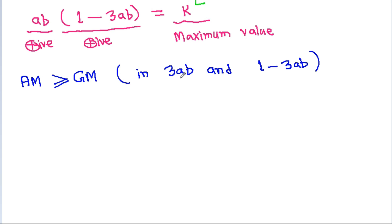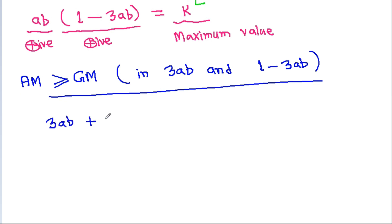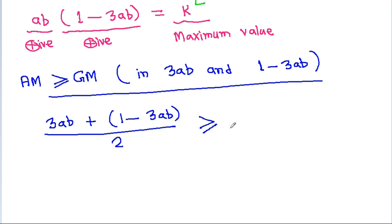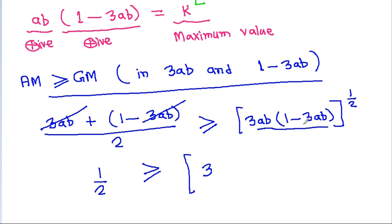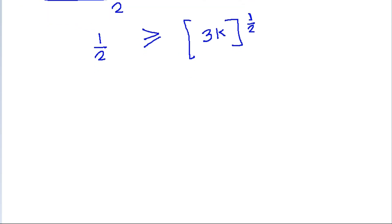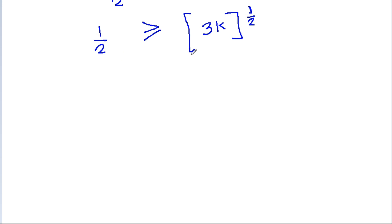When we add 3ab and (1 minus 3ab), the 3ab terms cancel. The AM equals [3ab + (1 minus 3ab)] divided by 2, which equals 1/2. The GM equals the square root of 3ab times (1 minus 3ab), which equals the square root of 3k. By AM ≥ GM, we have 1/2 greater than or equal to the square root of 3k. Squaring both sides gives 1/4 greater than or equal to 3k.